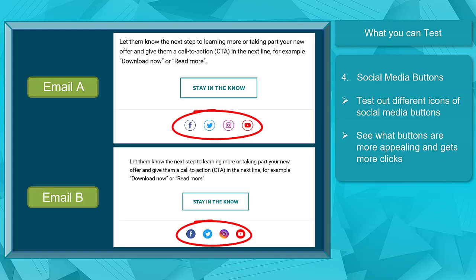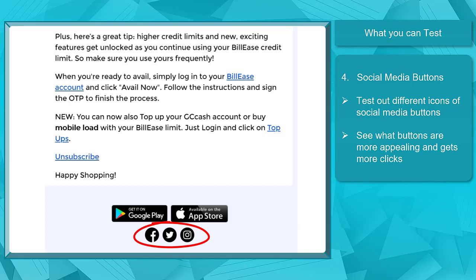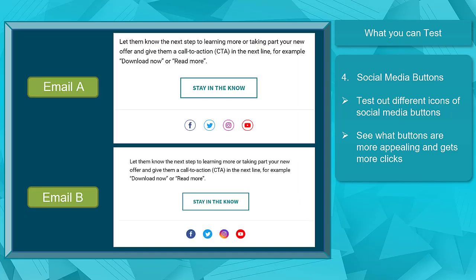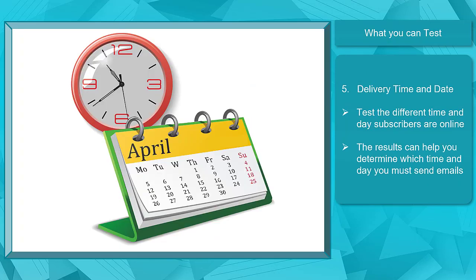Social Media Buttons. You may notice social media buttons at the end of an email content. This will help you get more people on your social media account so they can follow you. You can test different buttons to see what gets more clicks. Next, the Delivery Time and Date. You can switch the delivery time and date your emails are sent. Try to test what time and day subscribers on your list are more likely to engage with your email.